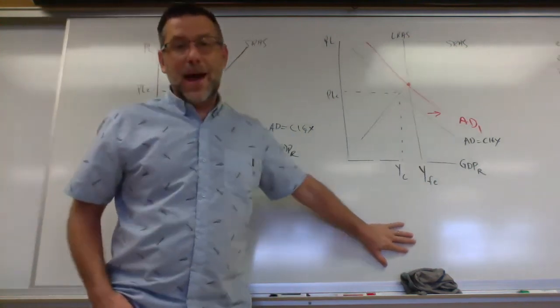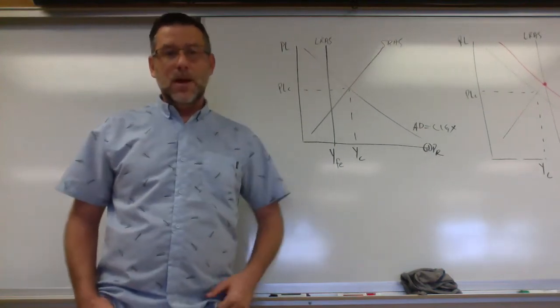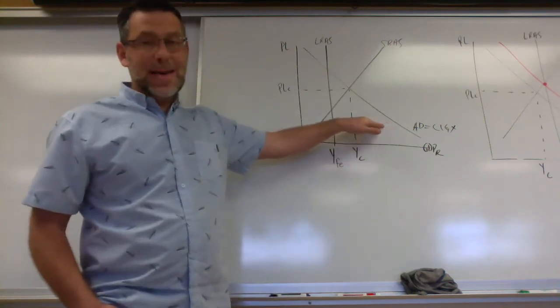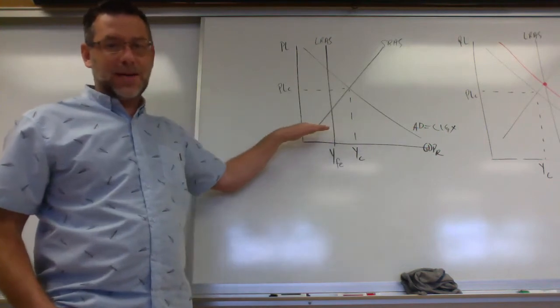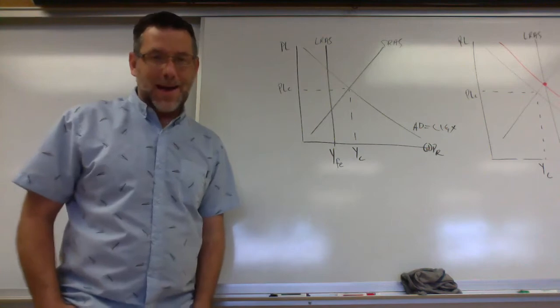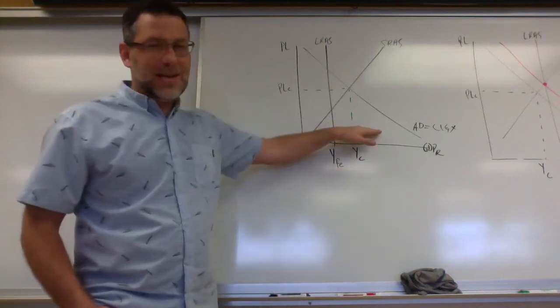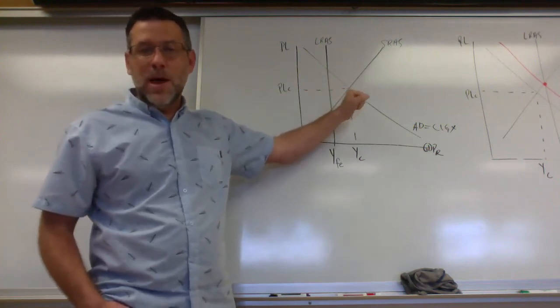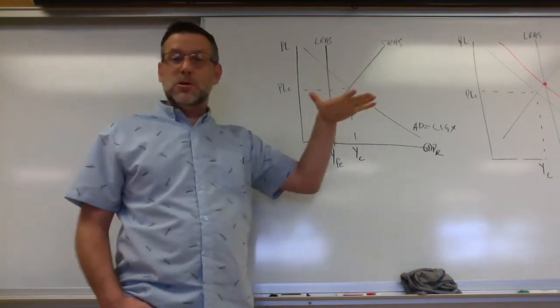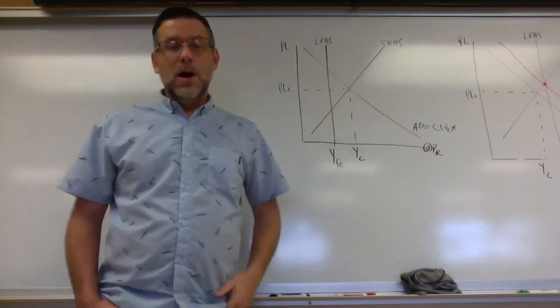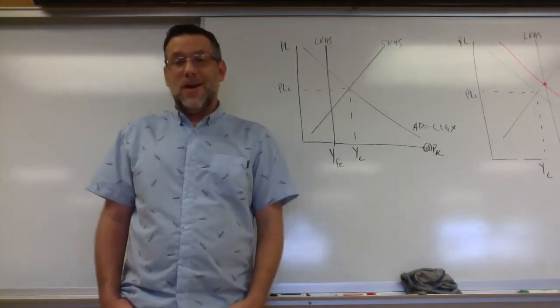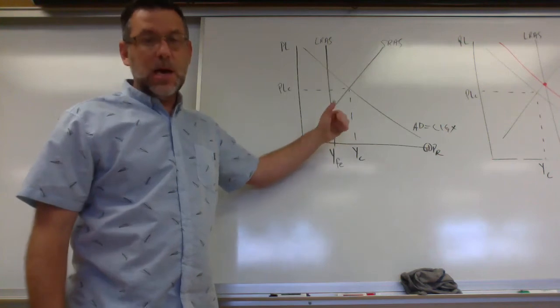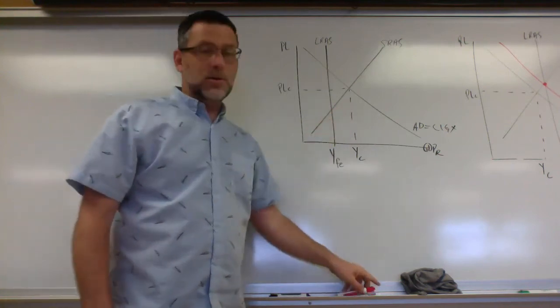Now, if we have an inflationary gap, like you see here, we can also fix this with fiscal policy. Now, in this case, we need to shrink aggregate demand. We need to bring aggregate demand back to the left to close that gap and put us back at a long run equilibrium. What's happened with an inflationary gap is that prices are increasing. There's too much demand for the resources that we have. It's unsustainable. If we can bring that demand back, we can reduce those prices back to where they were before without having to wait for the long run to eventually take care of this issue.